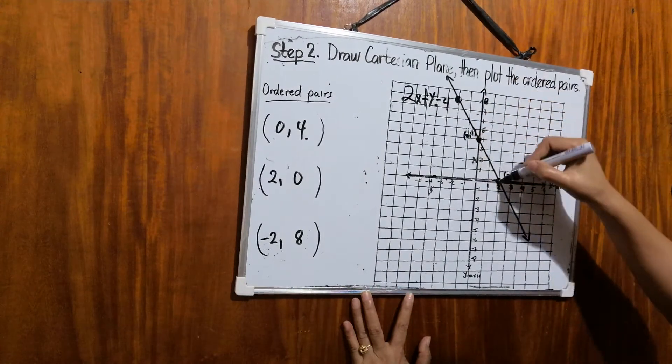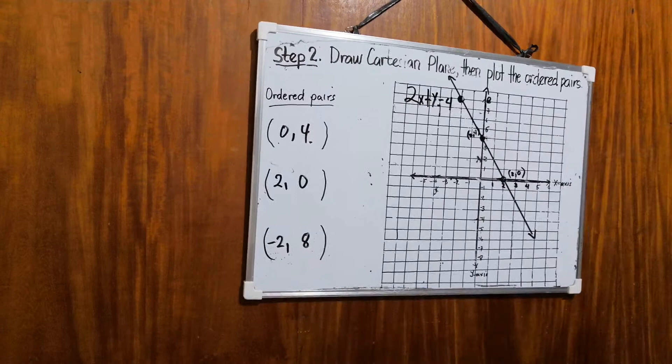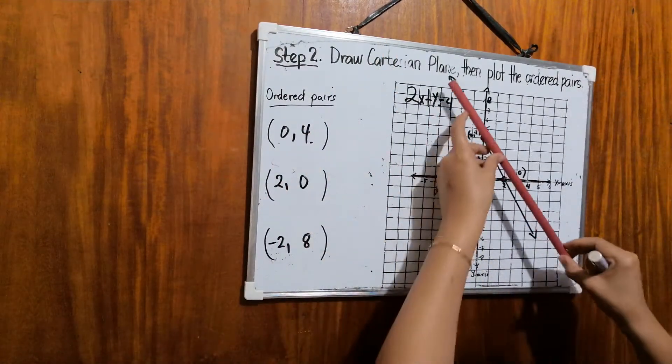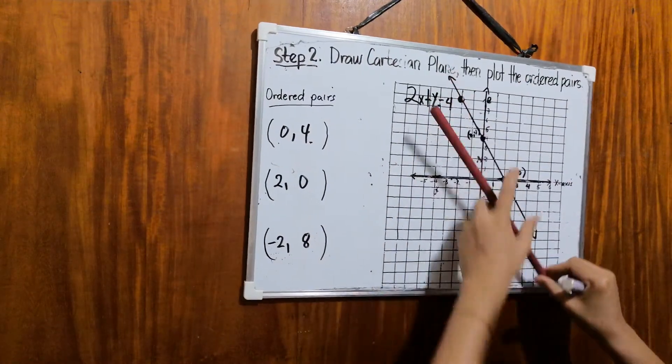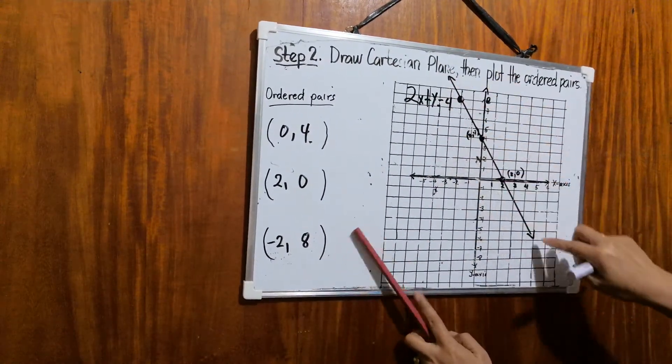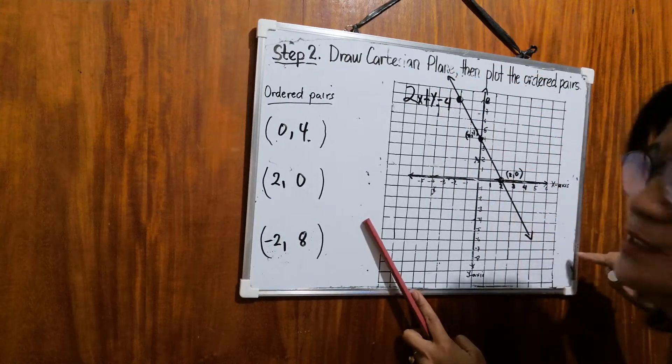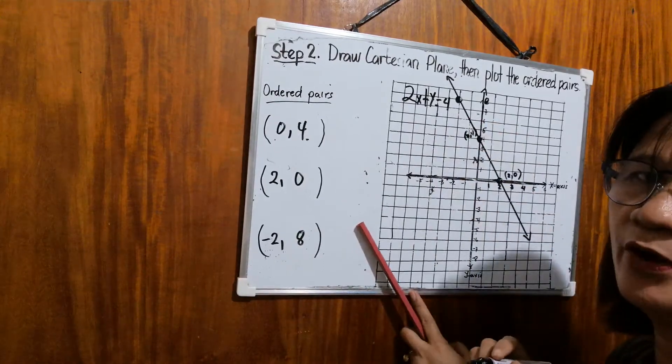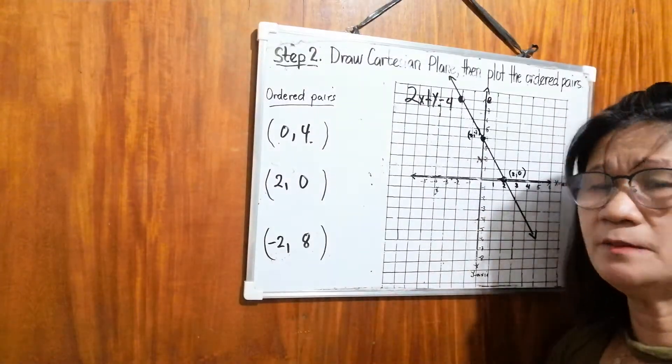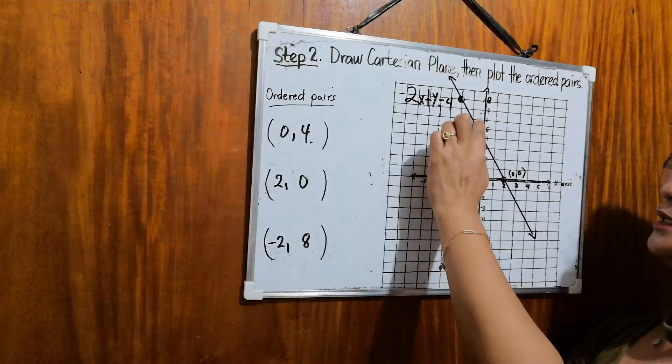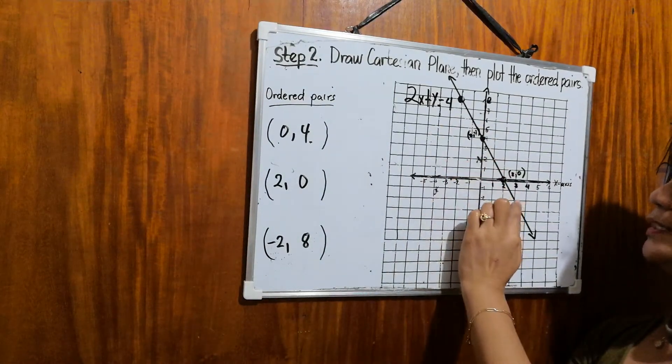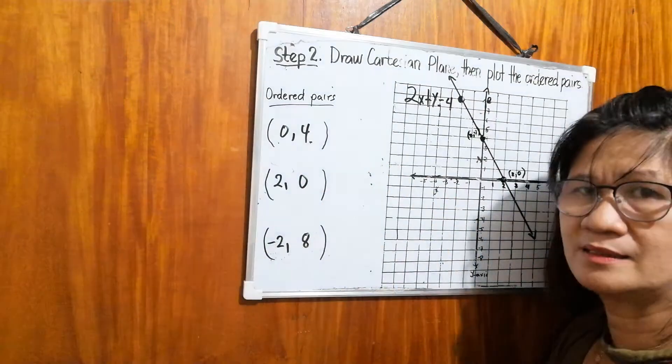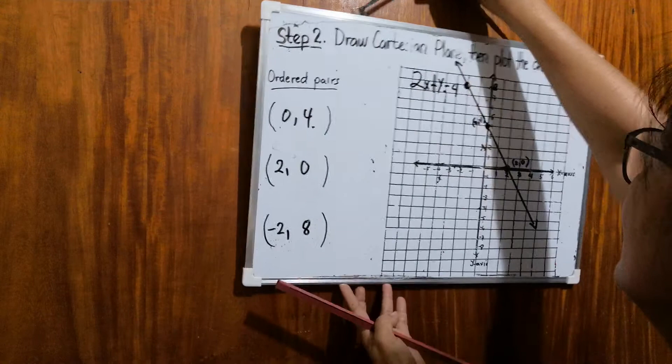After plotting the three ordered pairs, you'll use a straight edge or ruler. So you connect the three points. This line is the graph of 2x plus y equals 4. Remember, all the ordered pairs found at these intersection points, they belong to our solution set.